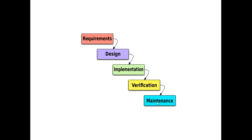Then we have the maintenance phase. If there are any bugs or defects in the application, there is a specific team to work on that — more than likely the development team who handled the implementation. This phase is used to fix anything that could go wrong with the application.